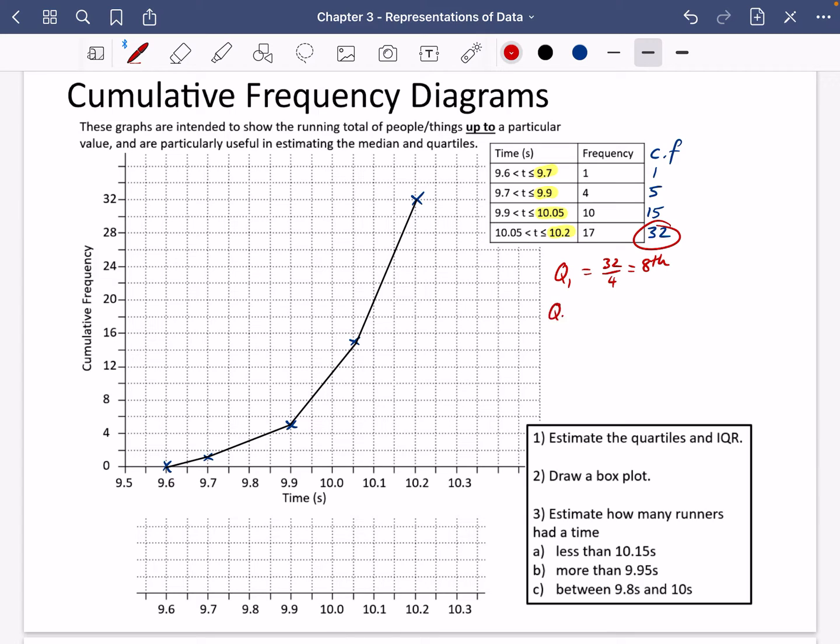The median, sometimes called Q2, we don't actually need to work that one out. But if we do, we know it would be in the 16th position. And the third one would obviously be in the 24th position.